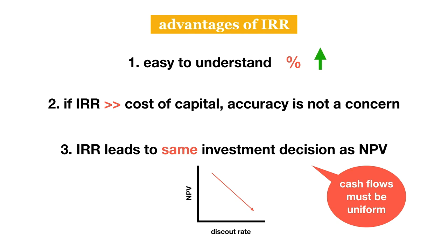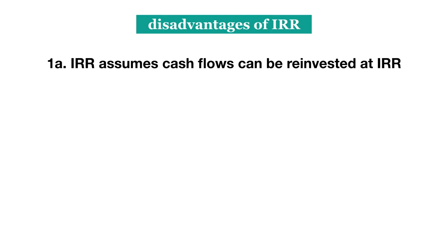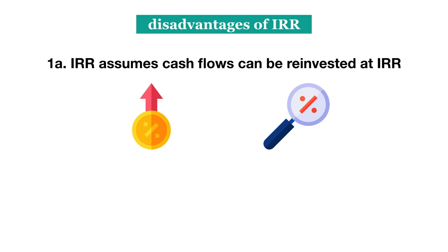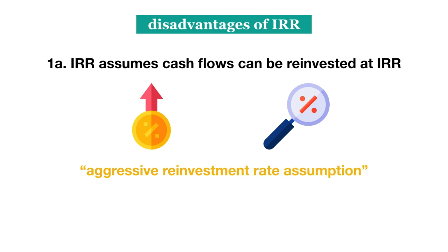However, there are some disadvantages to using IRR to make investment decisions. First, unlike NPV, which assumes that cash flows you receive during the project can be reinvested at the company's cost of capital, IRR assumes that these cash flows can be reinvested at the IRR. However, if the IRR is too high, this may not be realistic — we may not be able to find another investment that can yield such a high return. This issue is sometimes described as the aggressive reinvestment rate assumption. If this assumption does not hold, then our actual return will be lower than the IRR.